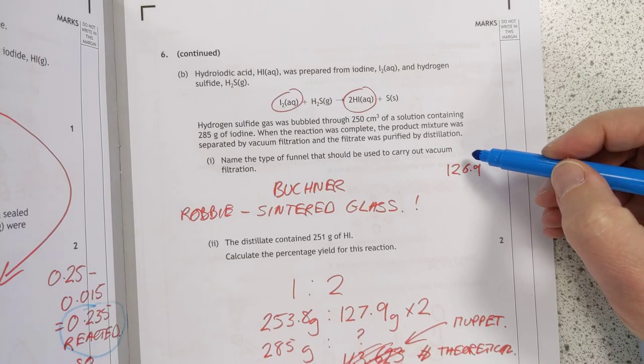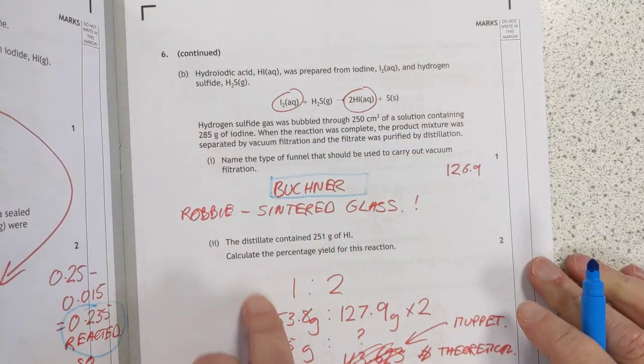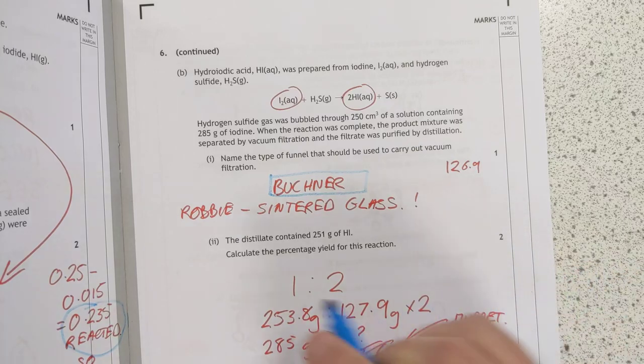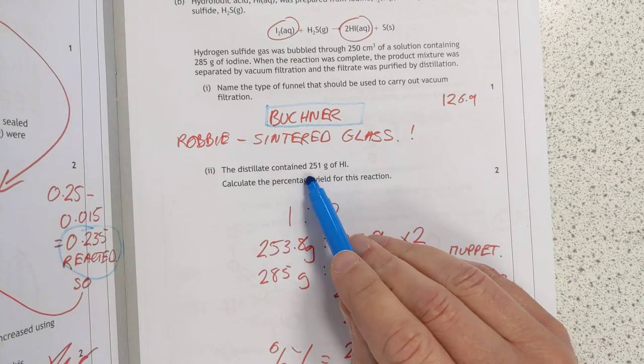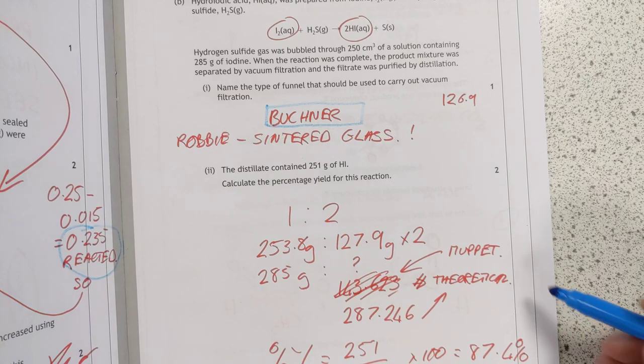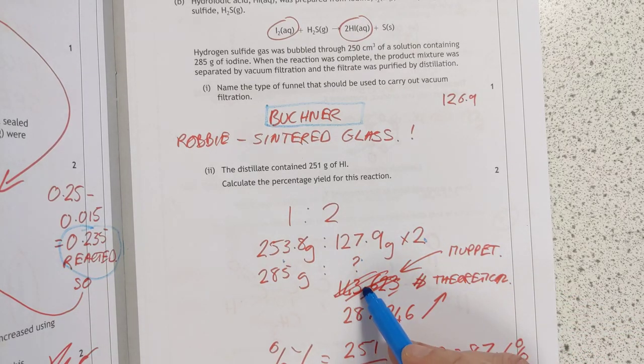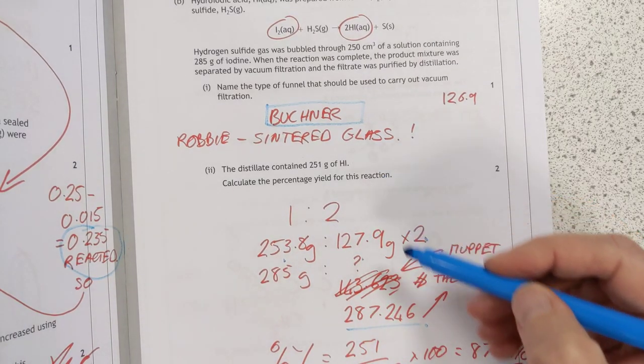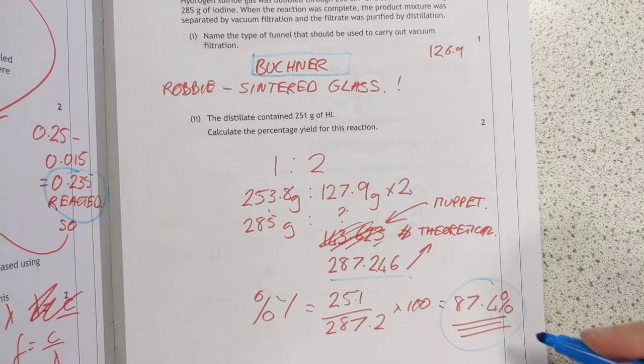This was an interesting one to ask. Very specific detail. Name the type of funnel that should be used to carry out vacuum filtration. I came up with Buchner funnel, which is the general name for it. Robbie has sintered glass. Ooh, sintered glass. He's right, of course. I don't know why I'm taking them in, so. What was it you were voted again, Robbie? Most likely two, I can't remember. The distillate contained 251 grams of hydrogen iodide. So, percentage yield. It's a one to two reaction here, guys. So, I'm working at the theoretical mass here. Here's the GFM of iodine. Here's the GFM of hydrogen iodide times two, of course. I forgot to multiply by two initially. Ha! Easy mistake to make. See, the theoretical mass of 287. We got... I could have caught that mistake, of course. I would have ended up with the percentage of more than 100. We're getting 87. That's a pretty good yield. 87.4%.